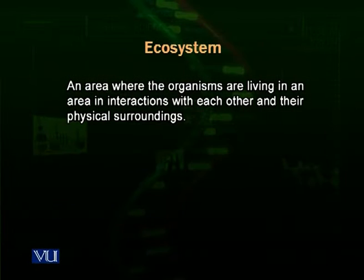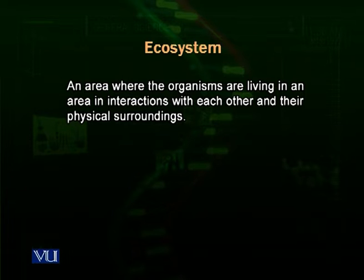Before going to food chains and food webs, we have to look at the ecosystem and its biotic components briefly. Then we will talk about the food chains and food webs. An ecosystem is an area in which biotic factors — the living organisms — are present in interaction with each other and in interaction with their non-living surroundings. We call it an ecosystem.